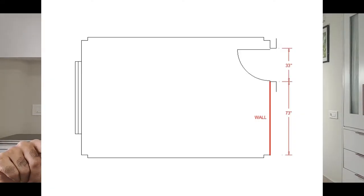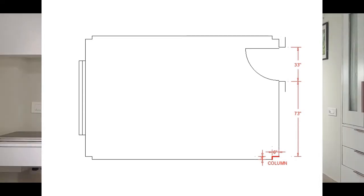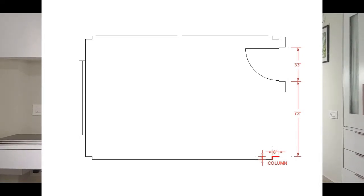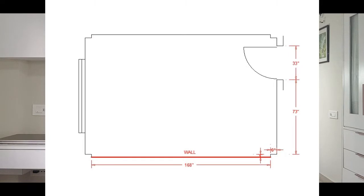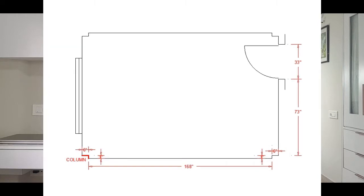So after the door, from the end of the door you measure to the starting of the column, then the length and breadth of the column, and after that you measure the length of the wall. Assuming there is no window on this wall, you measure from the end of the column to the beginning of the next column and write it on the plan. Then measure the length and breadth of the column at the corner.